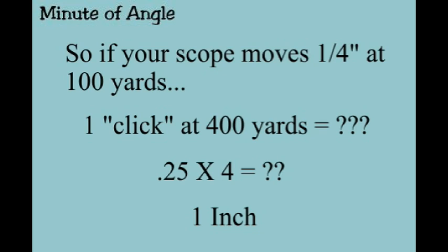So if that one click is a quarter of an inch at 100 yards, the same applies to the minute of angle. One click, a quarter inch click at 100 yards, is a half an inch at 200 yards, three quarters of an inch at 300 yards, or a full inch at 400 yards. At 800 yards, one click equals two inches. At 1,000 yards, one click on a quarter inch scope is two and a half inches of bullet movement. Make sense?